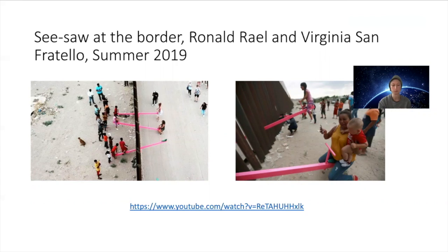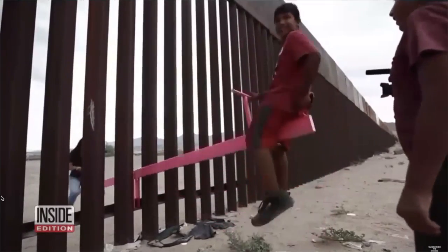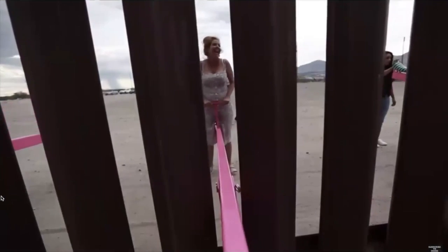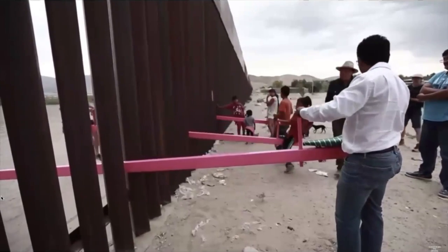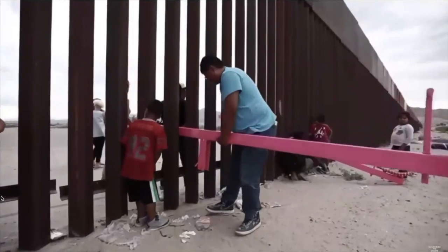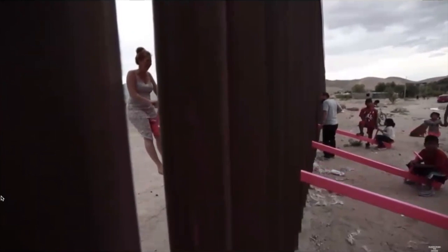This seesaw at the southern border, for example, was installed for just a short time last summer. It used the divisive image of the border wall to connect people on either side through a playful and colorful seesaw. Three neon pink seesaws poked through a large black metal fence connecting kids of all ages between Ciudad Juárez, Chihuahua, and El Paso, Texas. The idea was formed 10 years ago by two California professors, including architect Ronald Rael, who also teaches at the University of California. The thought was that even though people were separated, the seesaw would unite them.